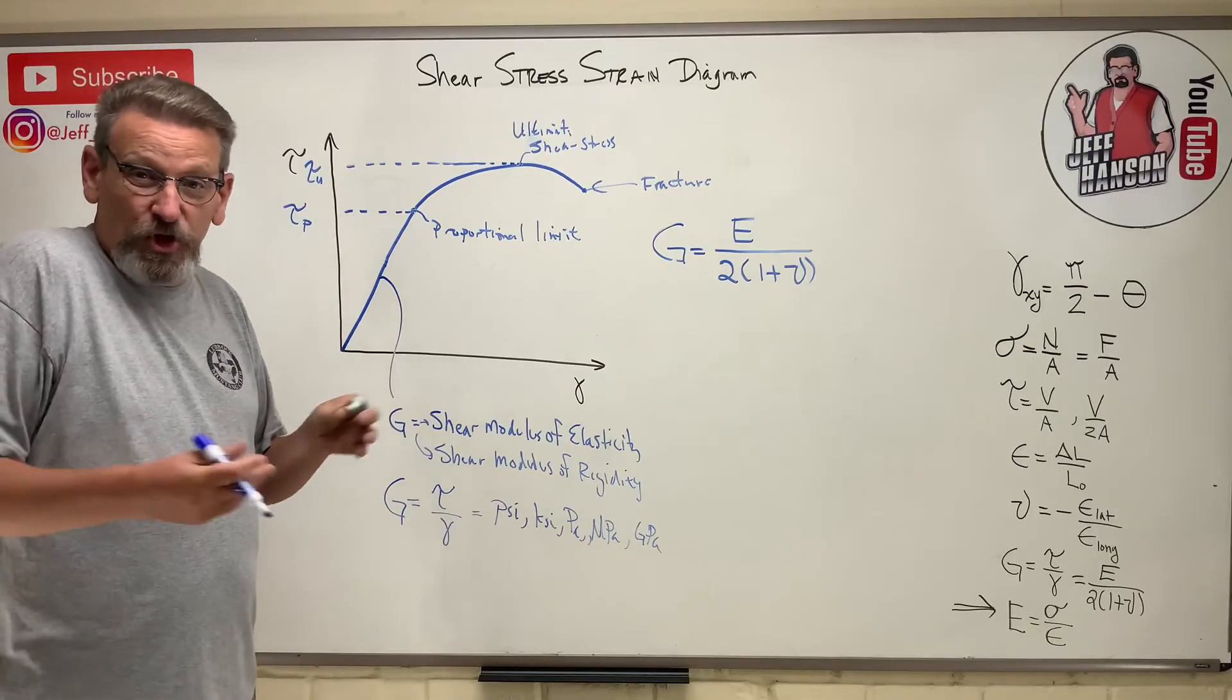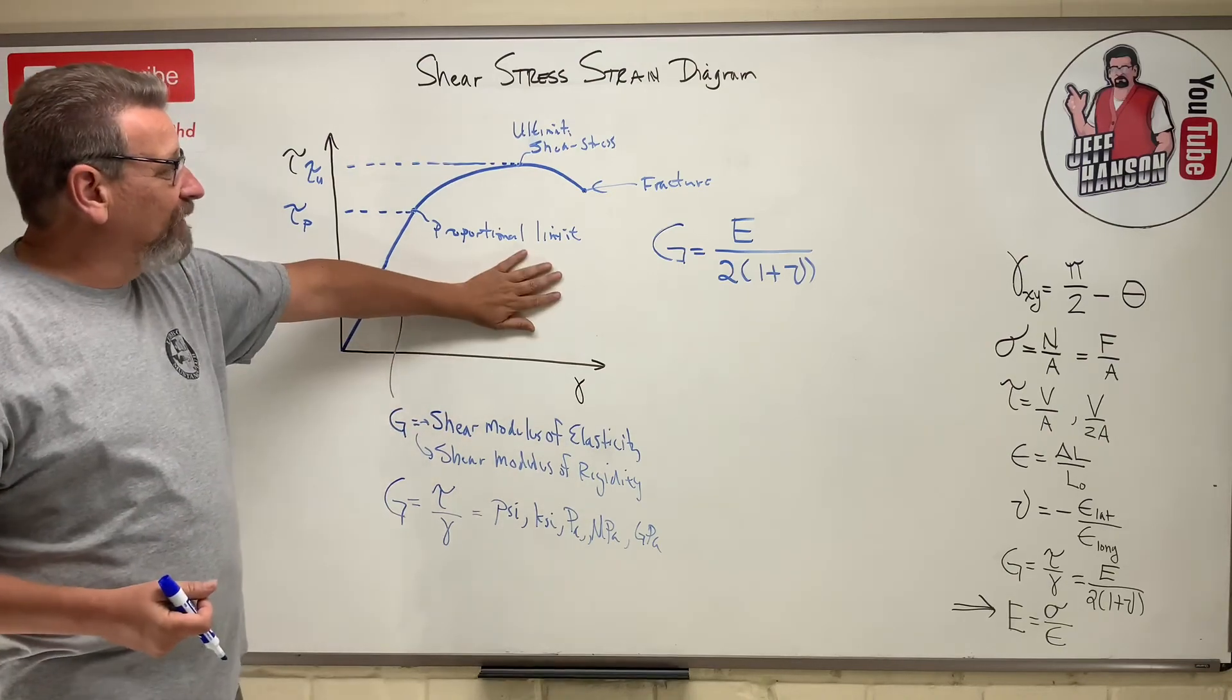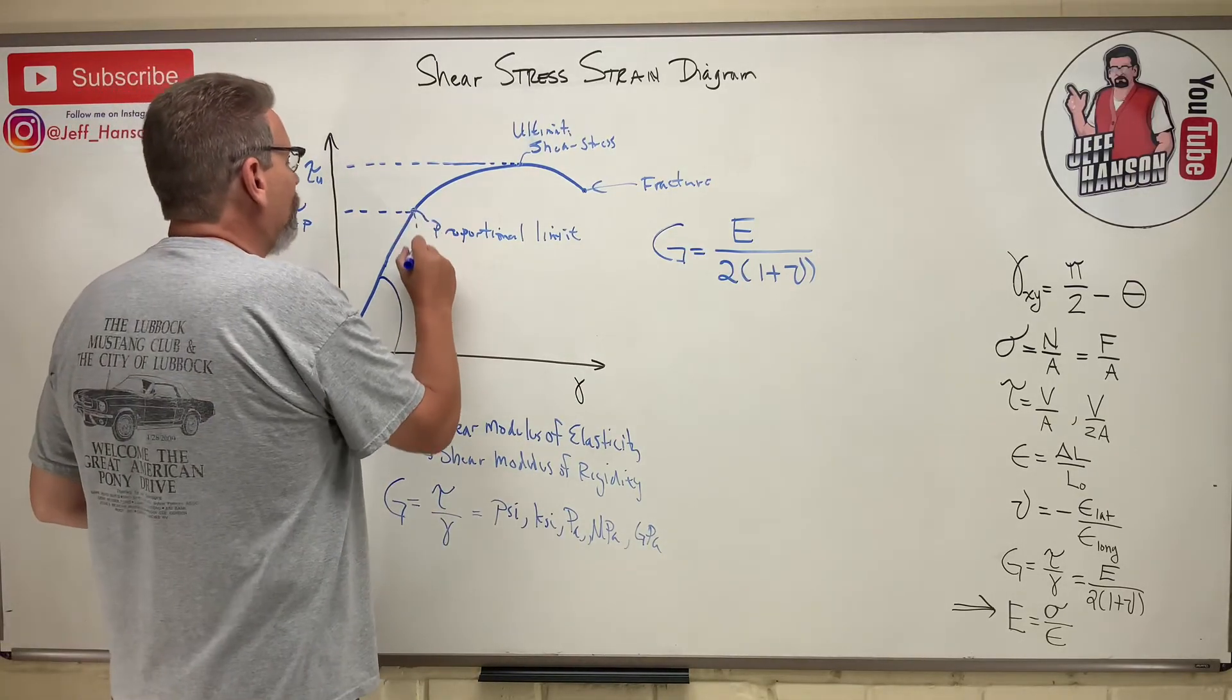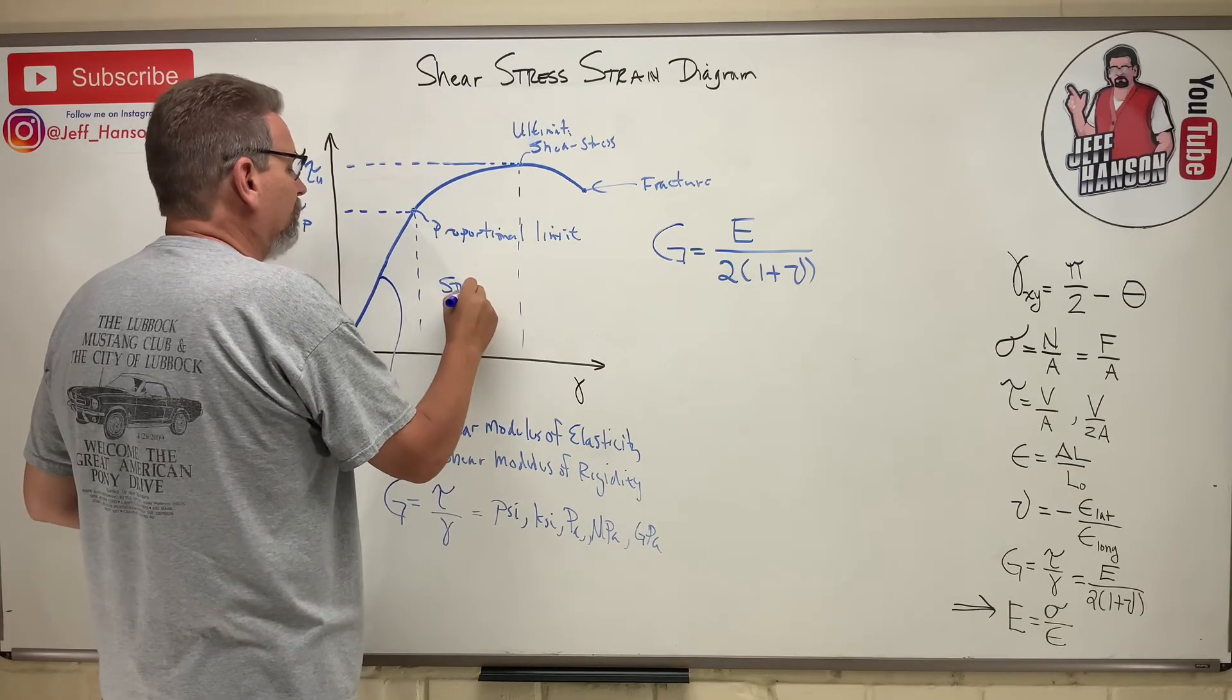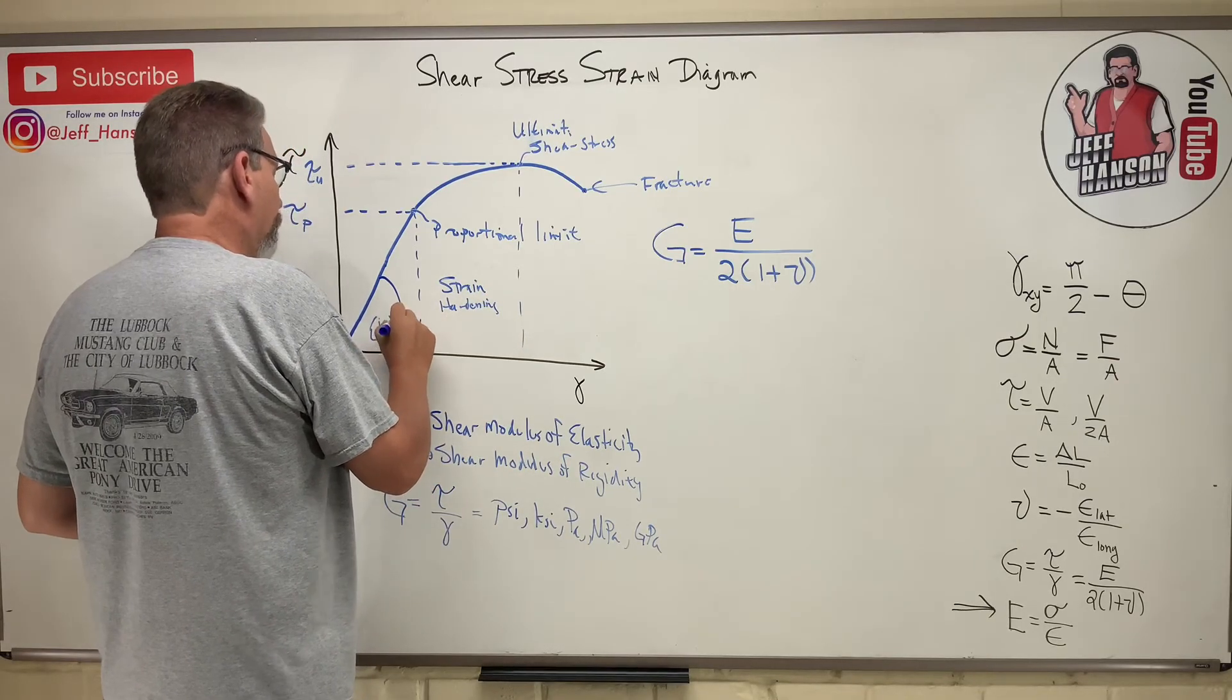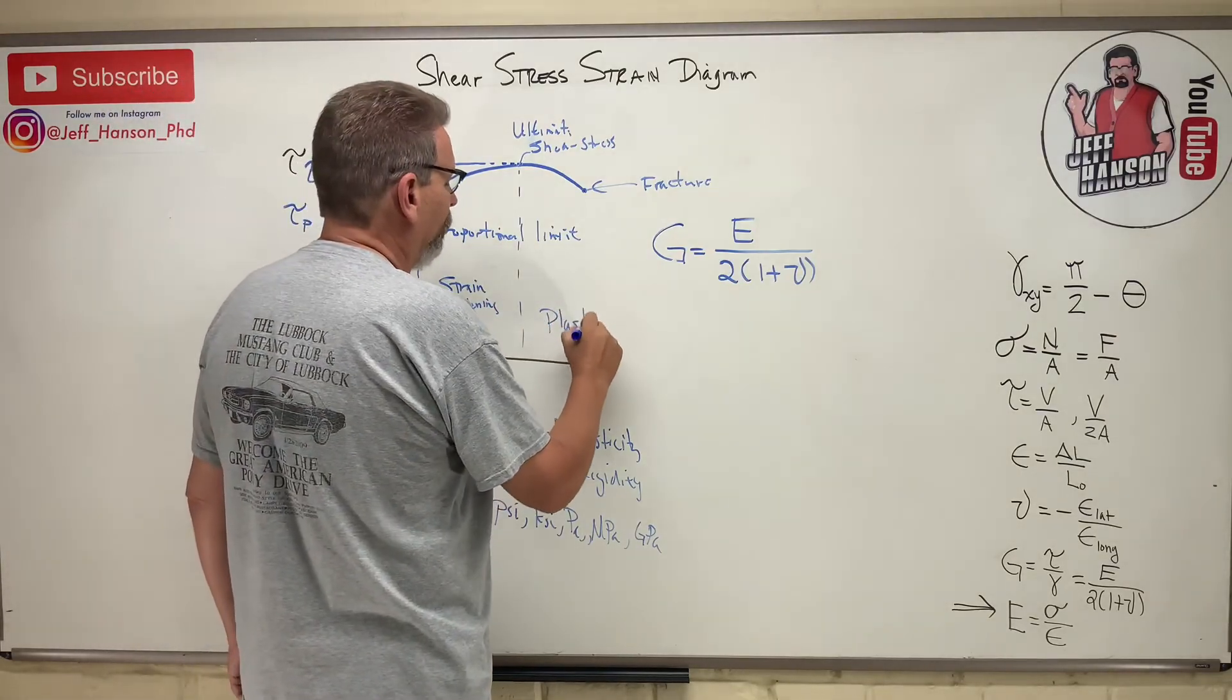So I hope that kind of clears up what the shear stress-strain diagram is and what it means. Now also, same thing, you have over here, you have strain hardening, just like you did before. This is the elastic region, and we call all this region over here the plastic region, just like we did in the other diagram.